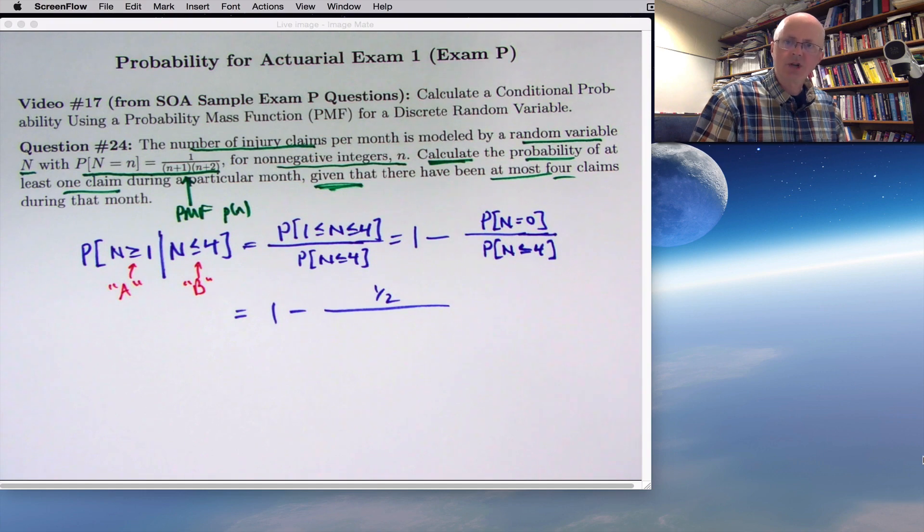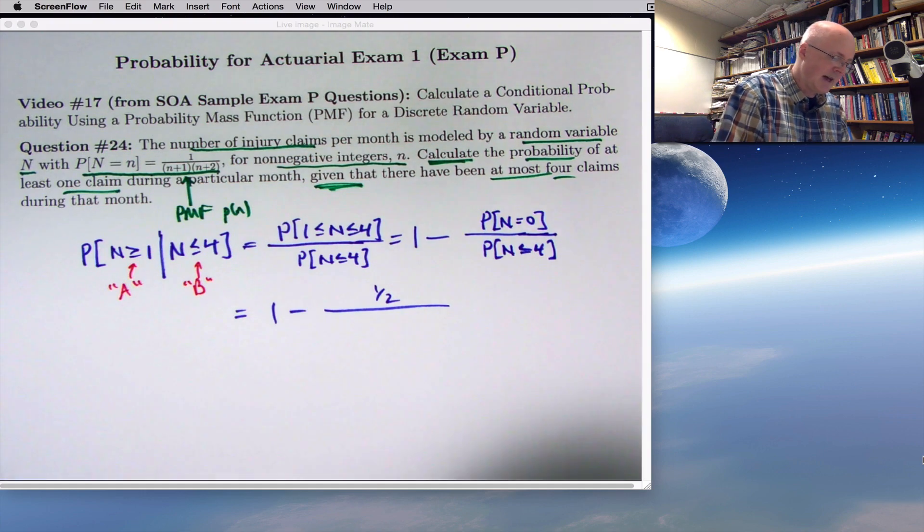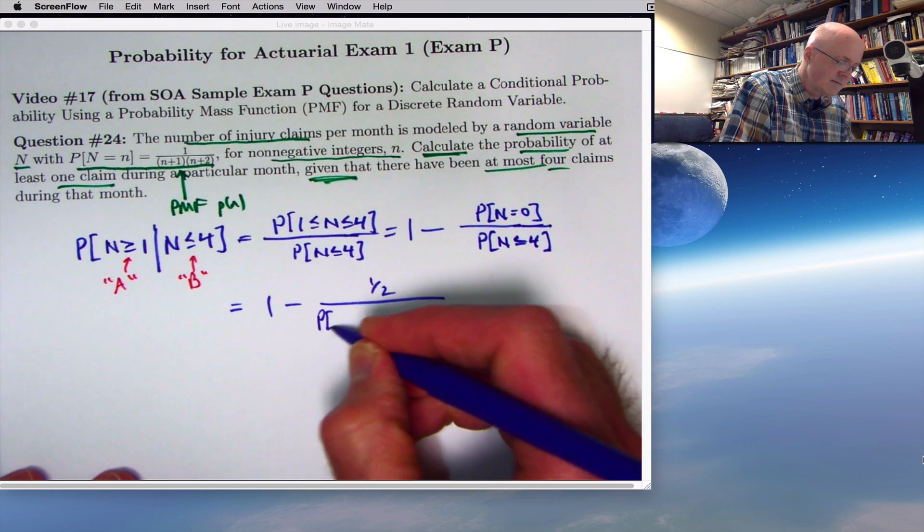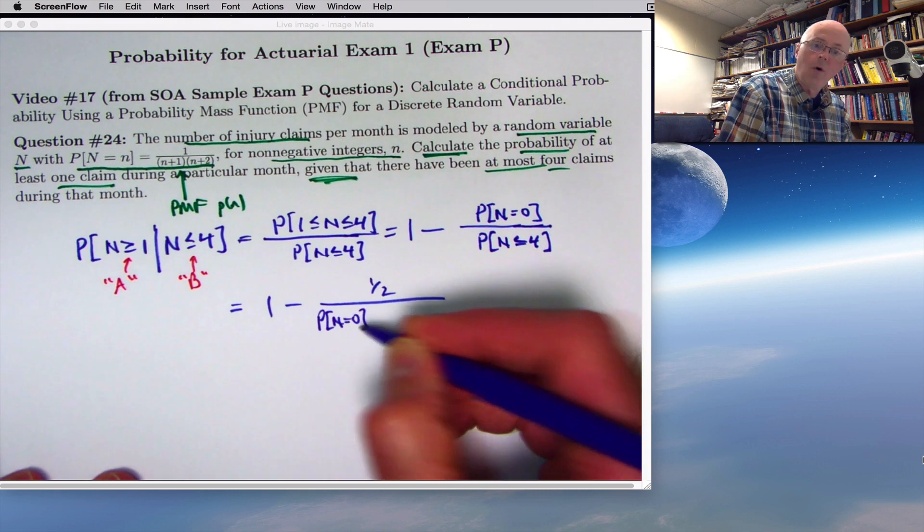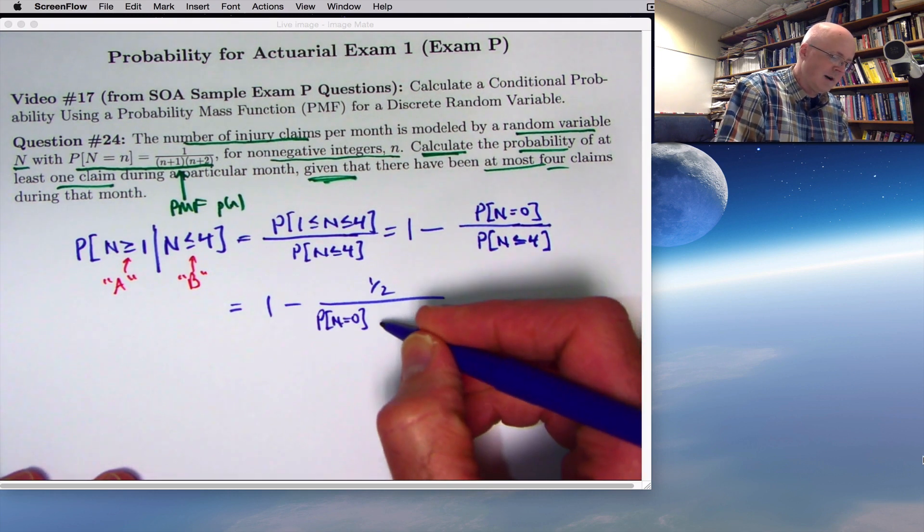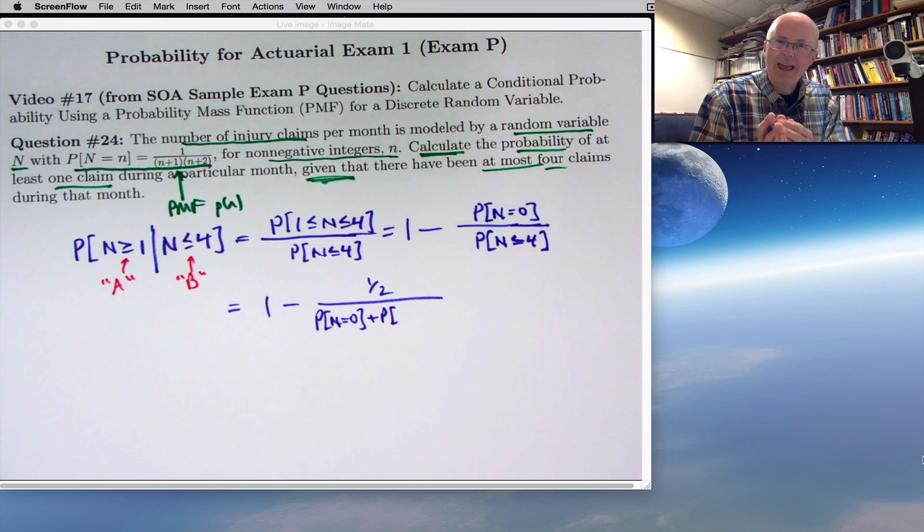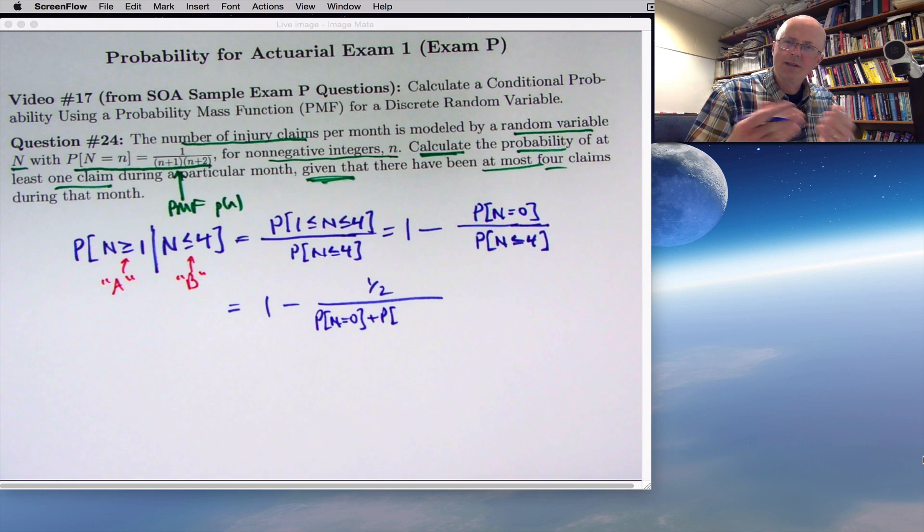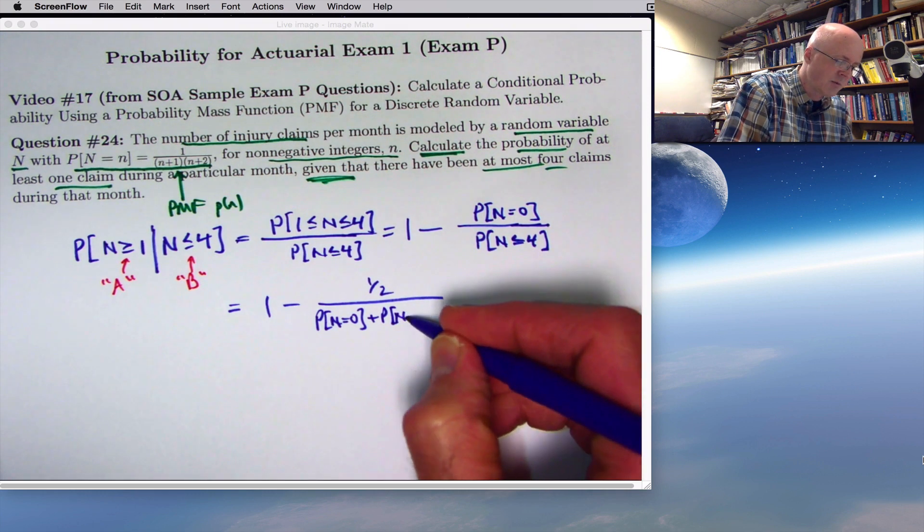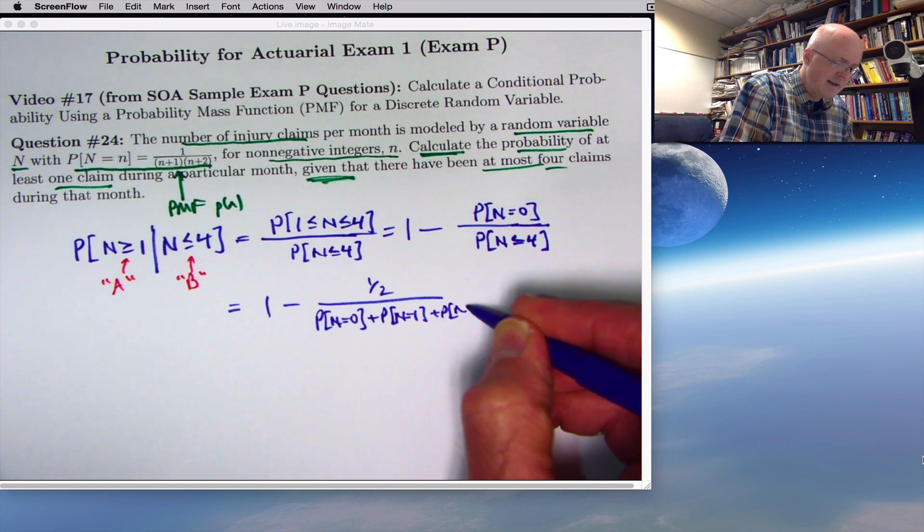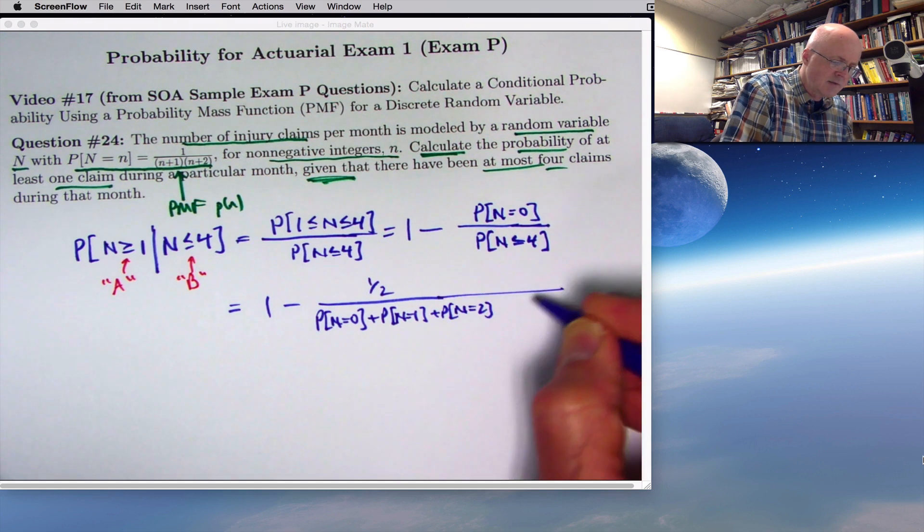You need to use the addition rule for mutually exclusive events here. This is the probability that capital N equals 0 or the probability that capital N equals 1, meaning add them. The event that N is less than or equal to 4 means capital N is 0 or 1 or 2 or 3 or 4. Those can't occur at the same time. They are mutually exclusive. So you can just add their individual probabilities.